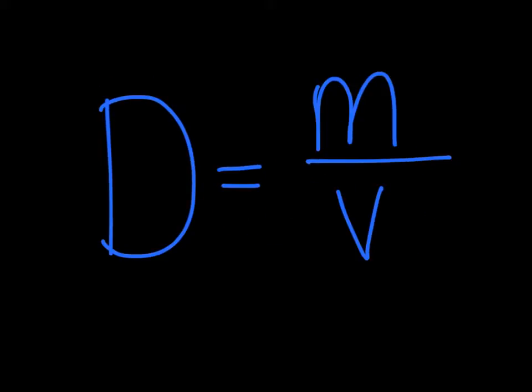This is the density equation: D equals M over V, so density equals mass over volume. Remember you need to have your mass in grams and your volume in either milliliters or liters, which is the typical unit. When you're asked to find the density, you just divide.